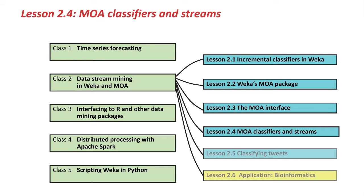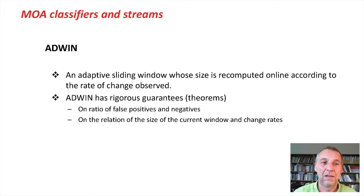So how do we deal with change? Some algorithms can basically, because of the way they work, implicitly adapt to change, but a better way is to do it explicitly. So we need a change detector.